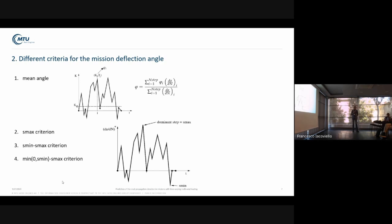The fourth criterion combines criteria two and three. If the mission is completely in the positive range, so the R-value is greater than or equal to zero, we take the dominant step criterion, whereas if we have a mission in which negative values also occur, or in which compression also occurs, we take the dominant cycle criterion.